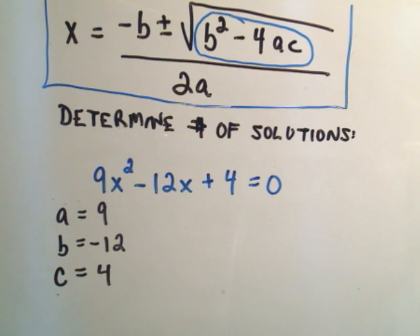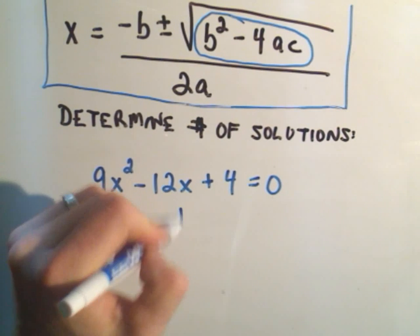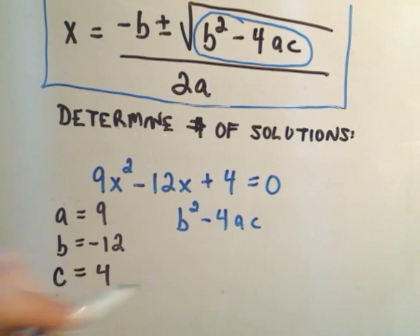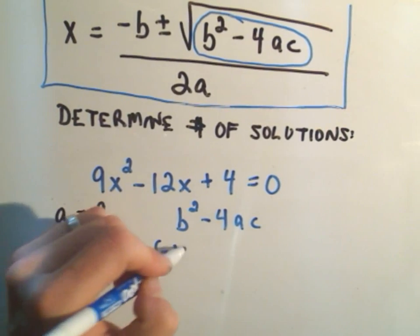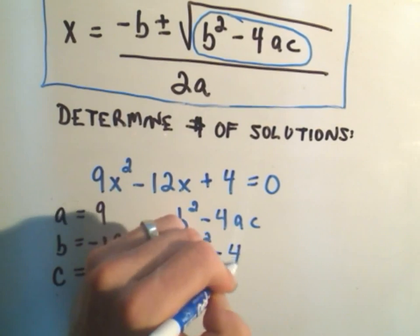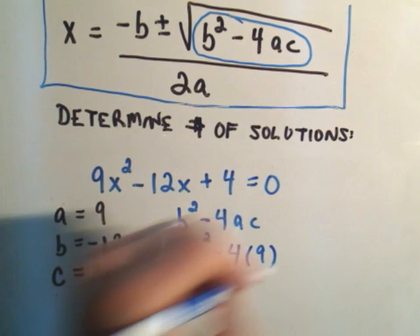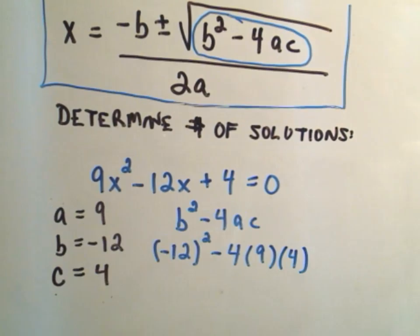So when we use the b squared minus 4ac, I just have to plug these numbers in. So I'll get negative 12 squared minus 4 times a, which is 9, times c, which is 4.